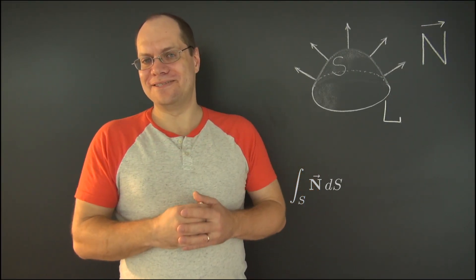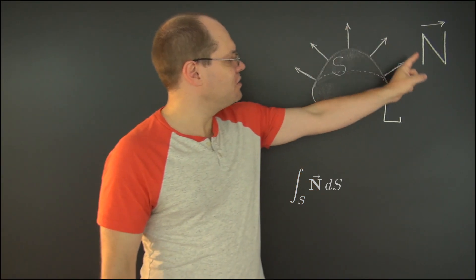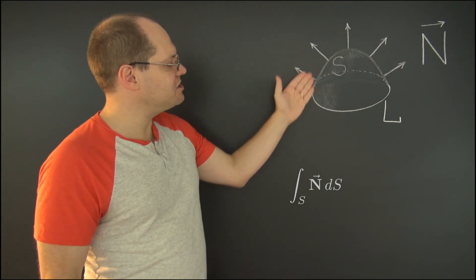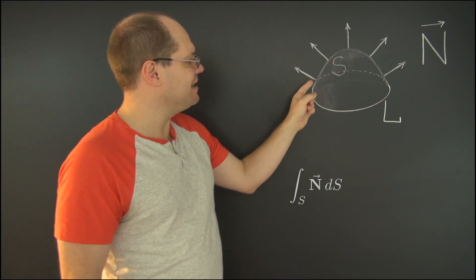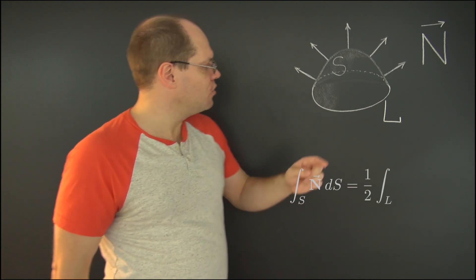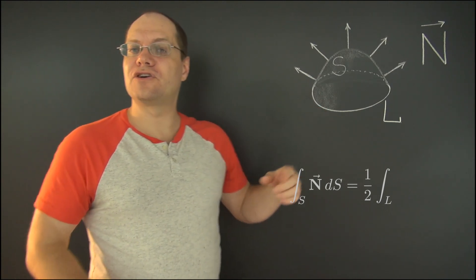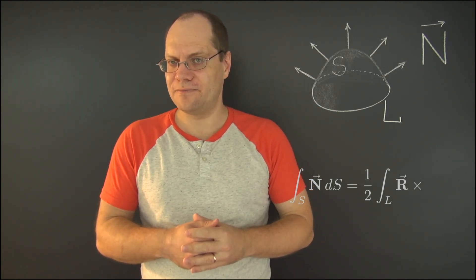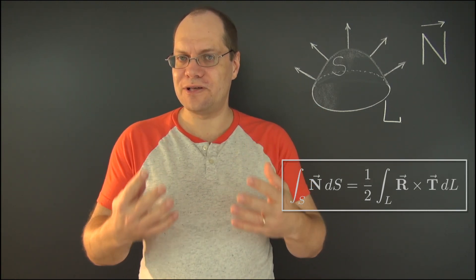Okay, here it comes. The integral of the unit normal over a patch S with boundary L equals one half, the contour integral over the boundary, of the cross product of the position vector and the unit tangent to the boundary.